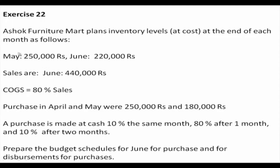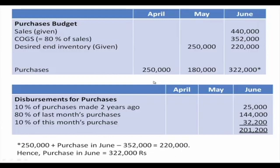These are desired inventory levels for May and June. June sales data are given, cost of goods sold given, purchases in April and May are given, not for June. This statement says that when a purchase is made, 10% of the amount is given in cash, and 90% given later — 80% after 1 month, 10% after 2 months. So we are required to find out for June how much to purchase and actual cash disbursements for purchases. So we prepare first of all the budget for purchase and the budget for cash disbursement.